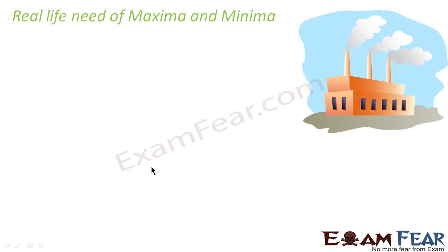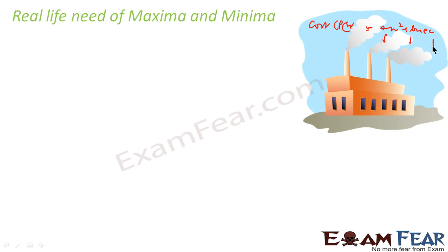Let's take some real-life applications of maxima and minima. You have a factory producing some goods. The cost of some product p(x) is determined by a formula like ax² + bx + c, where a, b, c are variable costs — for example, cost of labor, cost of electricity, cost of raw material. If you have this formula, you want to find the maximum cost or minimum cost, how to optimize — you can use maxima and minima.